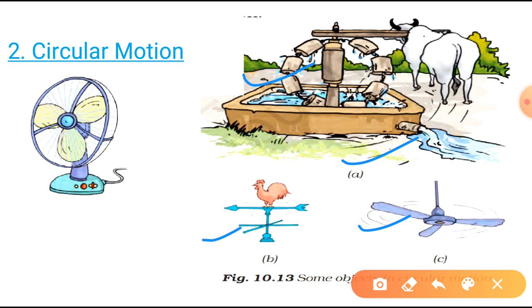Now, you can see fan, table fan. The blades of table fan show the circular motion. Now, let me tell you something interesting. Sometime, it may happen that an object may be showing both circular motion as well as straight line motion, that is the rectilinear motion.